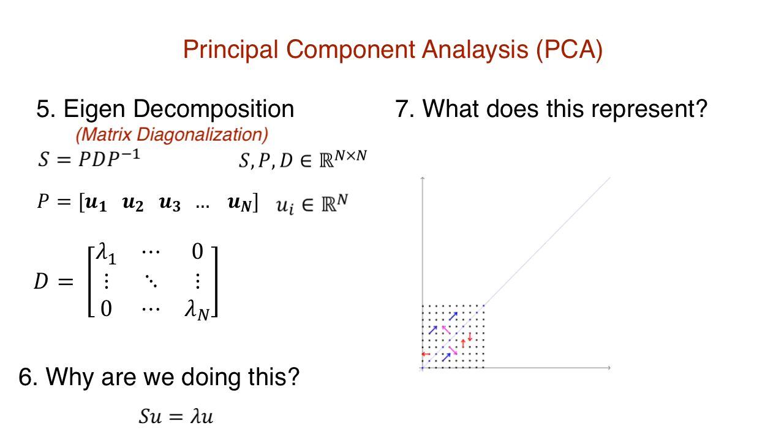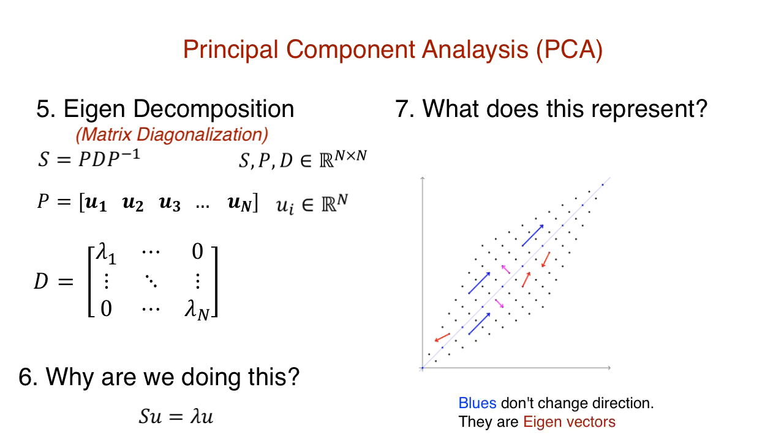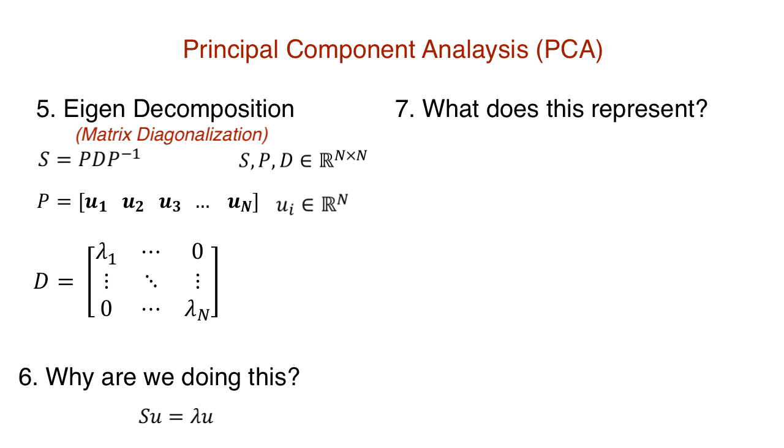Say we want to find the eigenvalues and eigenvector pairs of S. Then they must satisfy the equation S U is equal to lambda U, where lambda and U is one such pair. Now what does this represent? Well, just read it from the equation. A transformation applied on a vector U only changes its magnitude and not its direction. If we project our points in the direction of the vector U, we retain a variance proportional to lambda.